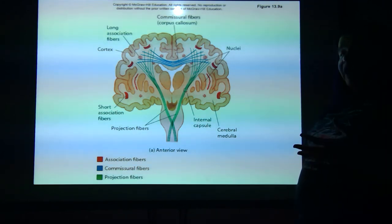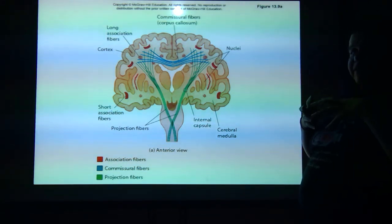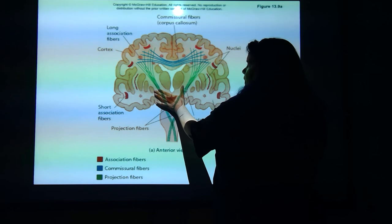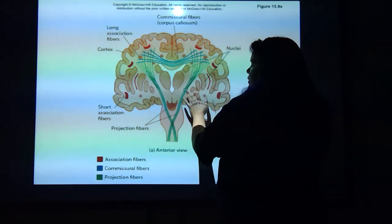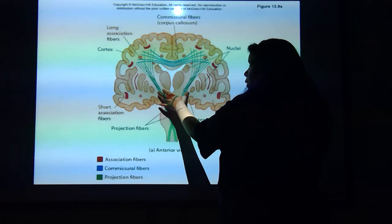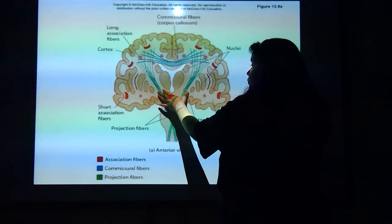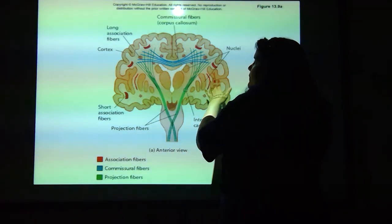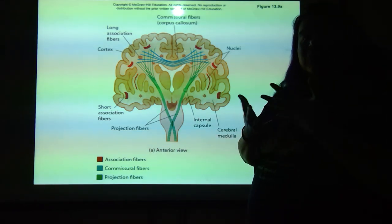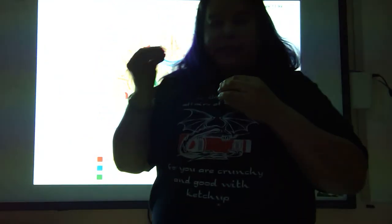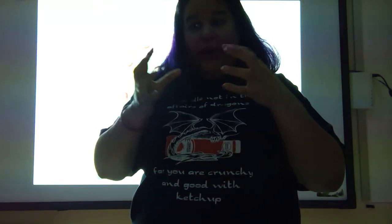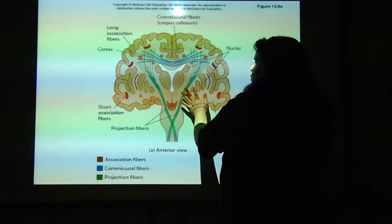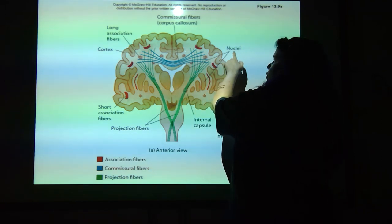Remember, the inside of the brain is white matter and the outside is gray matter. See all of this lighter color — this is all white matter. The core of your brain for the most part is white matter. These little bundles here are gray matter, but in your brain we call them nuclei. This is where cells meet up with other cells, where communication is happening.